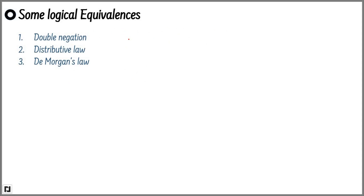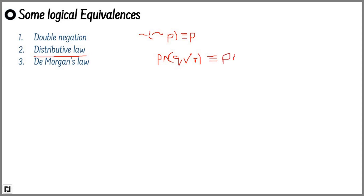In this slide, we have some important logical equivalences. The first is double negation: if we have a compound proposition like negation of negation P, then the two negations cancel each other out and it is equivalent to P. The second one is the distributive law: if we are given P AND (Q OR R), then it is equivalent to (P AND Q) OR (P AND R).